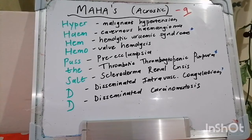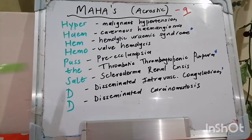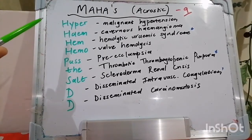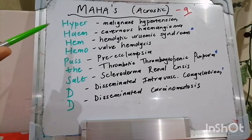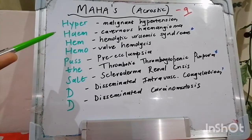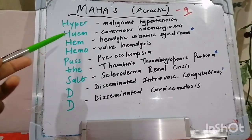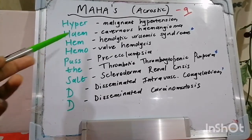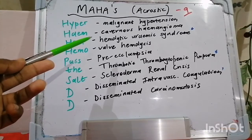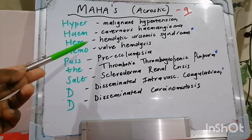The acrostic goes like this: HYPER speaks to malignant hypertension, which is associated with flame-shaped hemorrhages, cotton wool spots, and papilledema on fundoscopy. HEM speaks to cavernous hemangiomas, especially in the liver — hepatic cavernous hemangiomata.